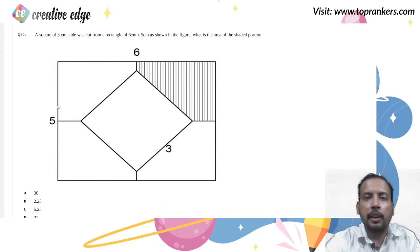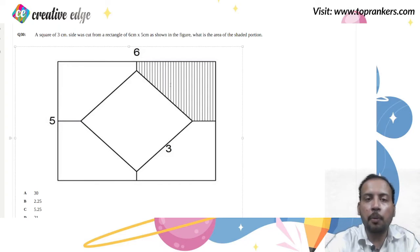Have a look at this friends. This question is again from surface area and volume. You have to find the area of the shaded region. This is the question from surface area and volume.